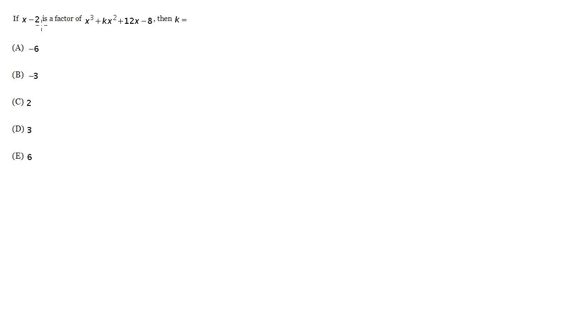One way we can deal with this question in theory would be to say that if this is a factor of this polynomial, I could divide this factor into the polynomial and I should be left with a remainder of zero. In other words, I should get some other quadratic, some other polynomial, that will be the result of dividing this x minus 2 into this. So you could do that and that's fine.